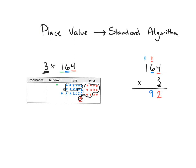Now for the last step, I'm going to make 3 copies of my 100. I have 3 hundreds plus this 1 hundred right here which I regrouped, giving me 4 hundreds. So I'm left with 4 hundreds, 9 tens, and 2 ones. The same thing on the standard algorithm — I multiply 3 times 1 hundred, and 3 times 100 is 300. Then I add in the 1 hundred I regrouped, so that's 4 hundreds total. I'm able to get the same answer, 492, using both the place value chart with disks and the standard algorithm.